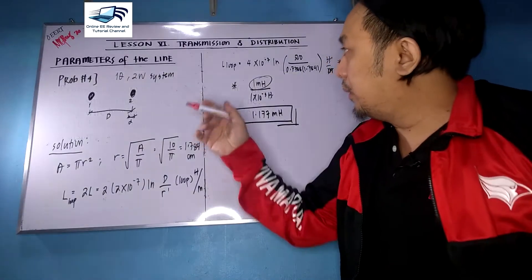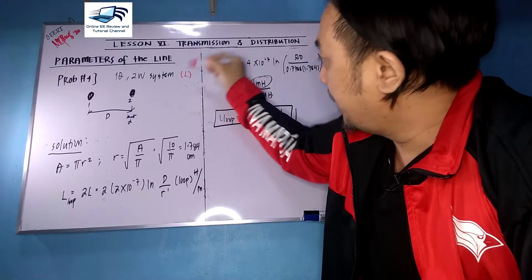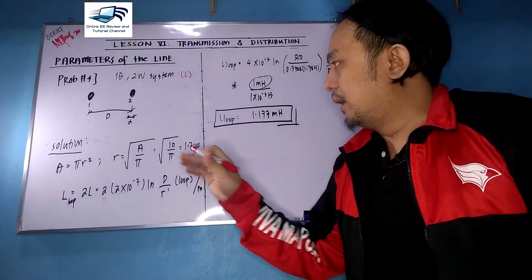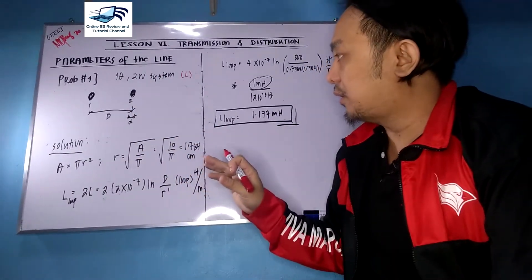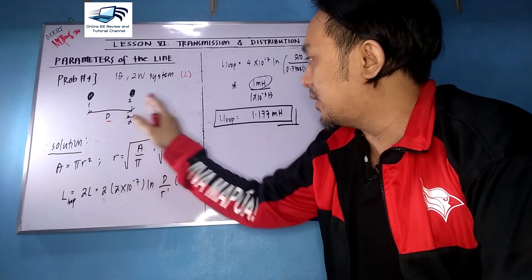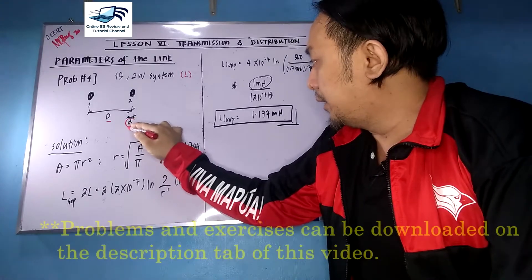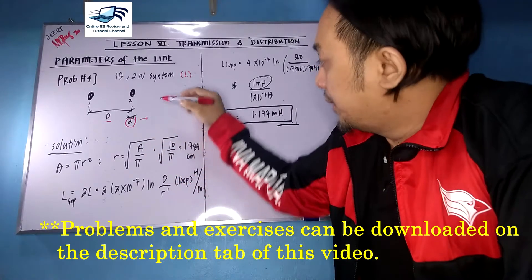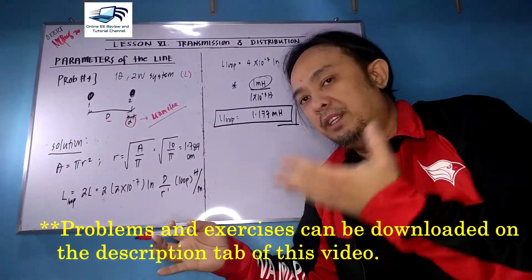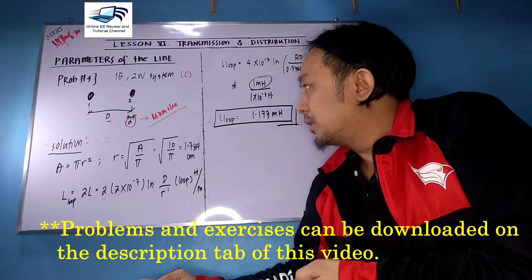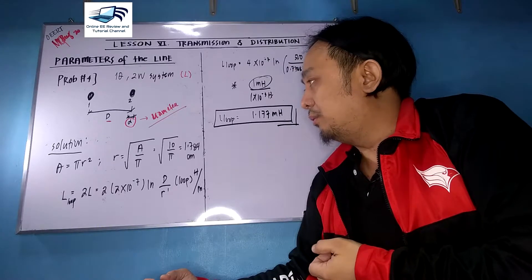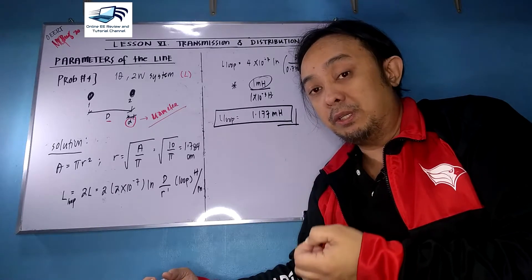We are working on inductance, which is the topic here. We consider a single-phase two-wire system with conductors one and two in a transmission line, separated by distance D — note that D is the distance between conductors and the smaller d is the diameter of the conductor. Since the given is area, we need to get the radius first, and then get the equivalent radius for inductance, which is 0.7788 times r.